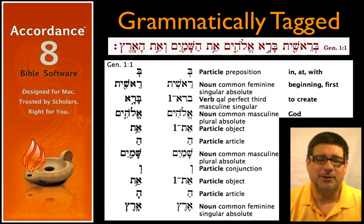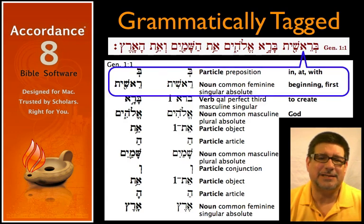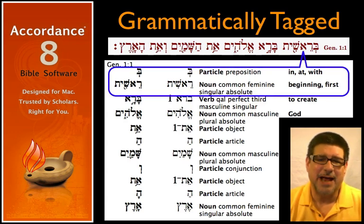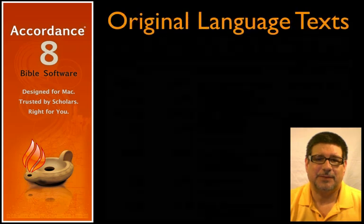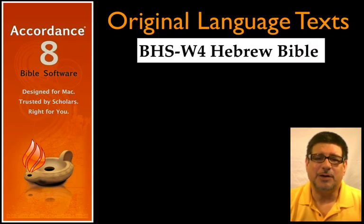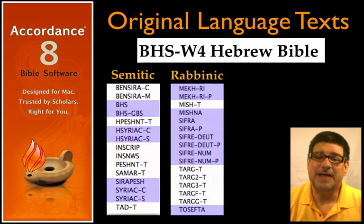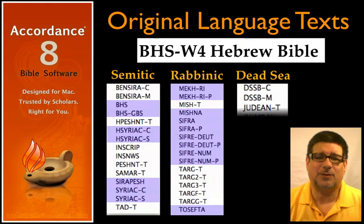Accordance allows you to search both what you can see and what you can't. Notice that Accordance even treats the prefixes and suffixes separately from the main word, as for example in Bereshit. In addition to the Hebrew Bible, Accordance offers a full range of original language texts for study in Semitic languages, rabbinics, even the Dead Sea Scrolls.